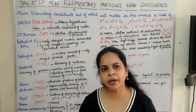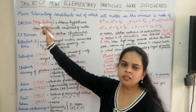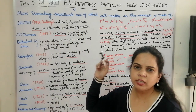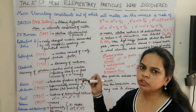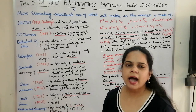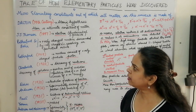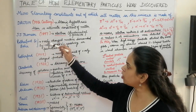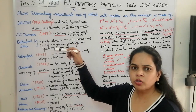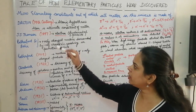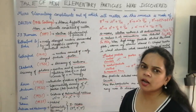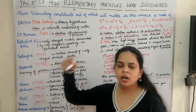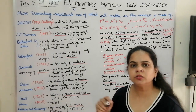Dalton in the 19th century was the first one to propose the atomic hypothesis — that the atom is the ultimate constituent of matter, and every matter consists of atoms. On the basis of Dalton's theory, JJ Thomson in 1897 proposed the watermelon model, in which the nucleus was the watermelon and electrons were the seeds. He regarded the electron as the fundamental particle.